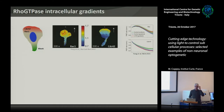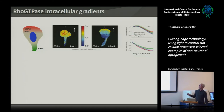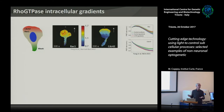I really like gradients. I was working on morphogen gradients before, so as a physicist I like to understand how these patterns can emerge in cells and what mechanisms shape them. Looking at these GTPase gradients, we wanted to know: what are the mechanisms that shape them — is it diffusion, degradation, local activity? All of that.